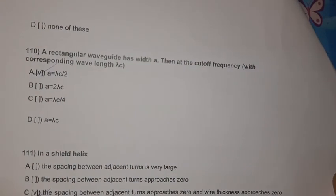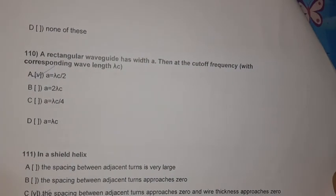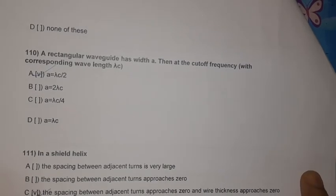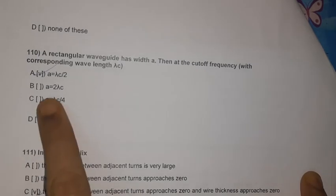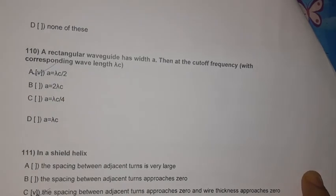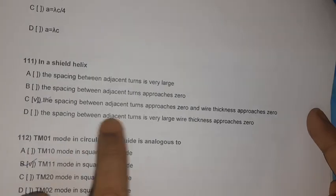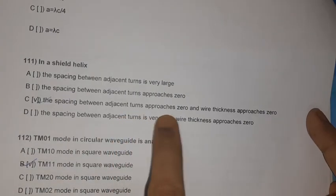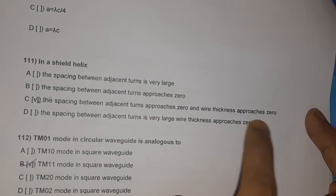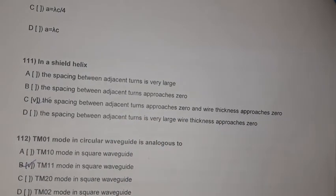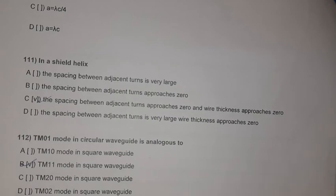Question 108: For a rectangular waveguide of width a, at the cutoff frequency the corresponding wavelength λc = 2a. Question 109: In a shielded helix, the spacing between adjacent turns approaches 0 and the wire thickness approaches 0.